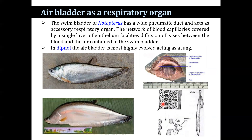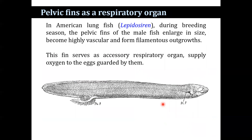In some cases, the pelvic fins also serve as a respiratory organ. In the American fish Lepisosteus, during breeding season, the pelvic fins of the male fish enlarge in size, become highly vascular, and form filamentous outgrowths. This fin serves as an accessory respiratory organ, supplying oxygen to the eggs that are guarded by them.